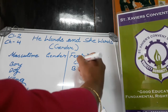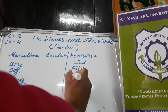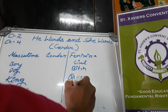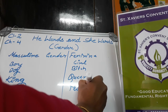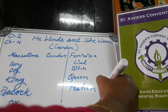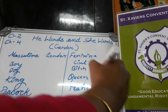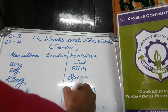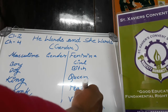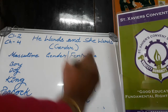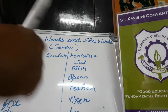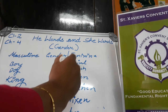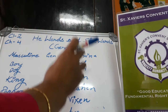For dog, the feminine gender is bitch. For peacock, the feminine gender is peahen. These are males and these are their feminine gender counterparts — the females of human beings or animals.